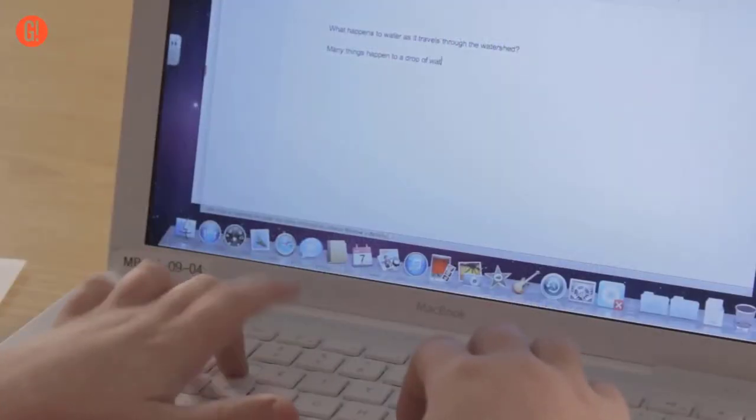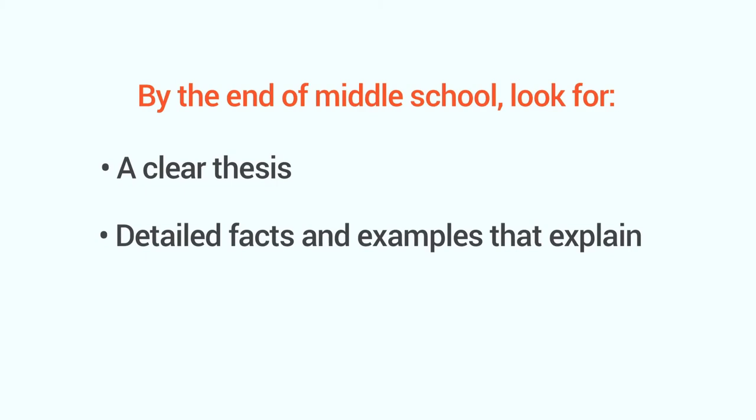So what should you look for in your middle schooler's writing? Well, by the end of middle school, look for a clear thesis that answers a question, detailed facts and examples that explain what they know about the topic, and some simple analysis used to make a point and tell why it matters.